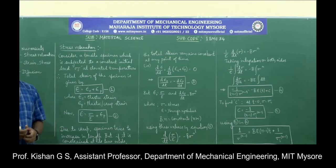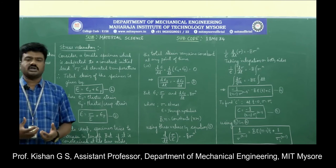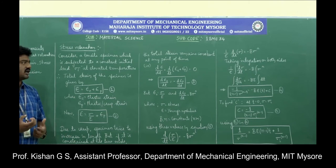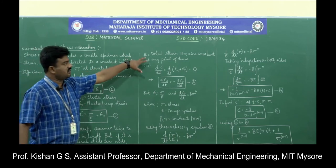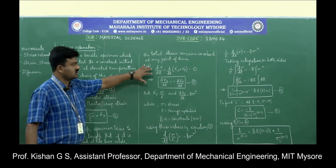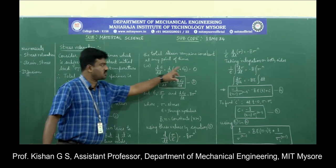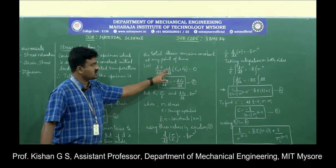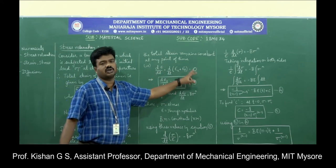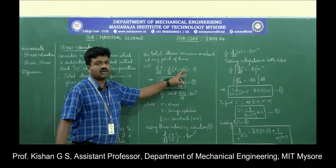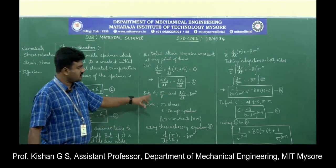When the stress relaxation factor is considered, it is subject to creep-type loading. Due to creep, the specimen tries to increase in length, but if it is constrained at both ends, the total strain remains constant at all times. Therefore, the derivative of epsilon with respect to time equals zero. Substituting epsilon = epsilon_e + epsilon_p and equating to zero gives: d(epsilon_e)/dt = -d(epsilon_p)/dt.